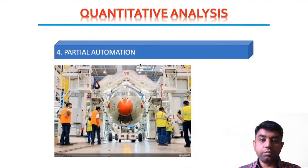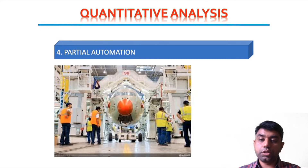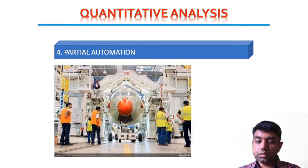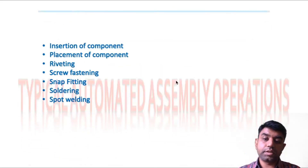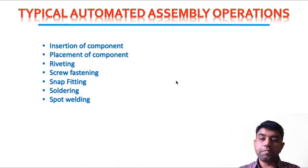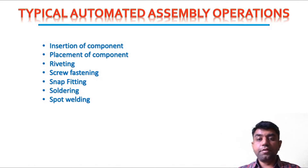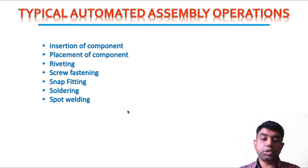The last technique is partial automation. Sometimes we cannot depend completely on automated systems alone. For example, in the aircraft industry, after a computer checks the quality of a part, a manual check of different parts is also performed — that is quantitative analysis using partial automation. Common assembly operations made with automated assembly lines include insertion of components, placement, riveting, screw fastening, snap fit, soldering, and spot welding.